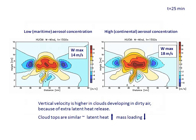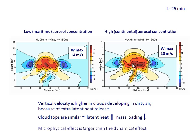Here you can see fields of vertical velocity in the case of low aerosol concentration and high concentration — about 1,500, typical of continental clouds. You can see that the vertical velocity of clouds developing in polluted air is higher. This is the so-called convective invigoration caused by aerosols.